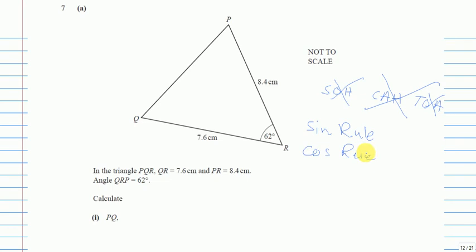How do we know which one to use? For the sine rule you need two angles and two sides. For the cosine rule you need one angle and three sides. Any one of the four values can be the unknown. In this question we are given one side, a second side, one angle, and we need to find the third side — so that is three sides and one angle, which means we use the cosine rule.